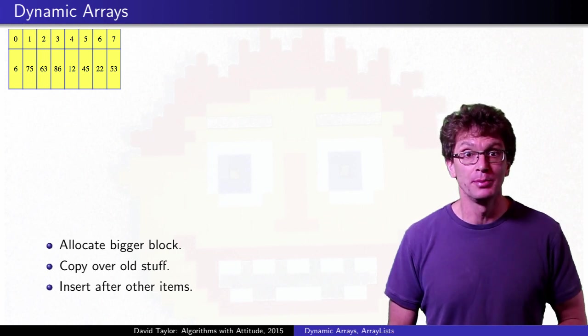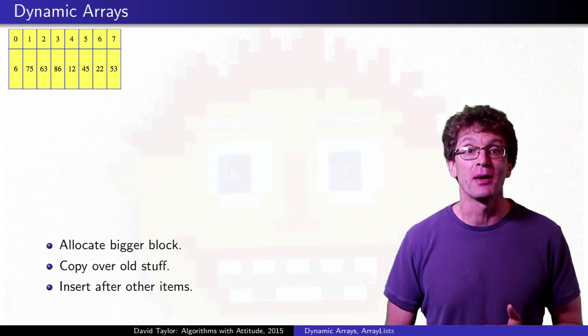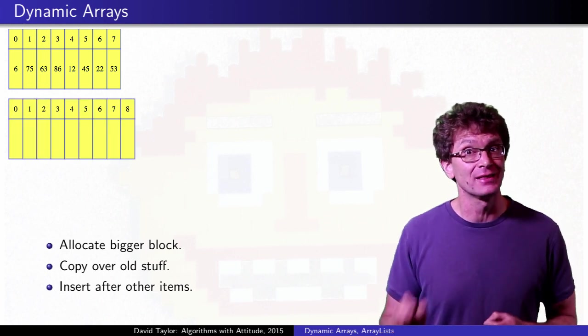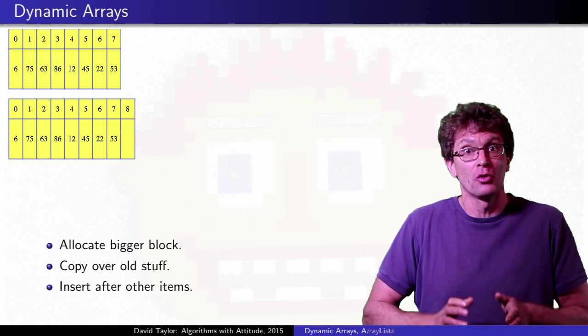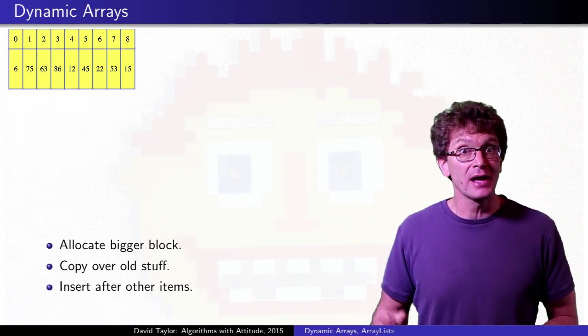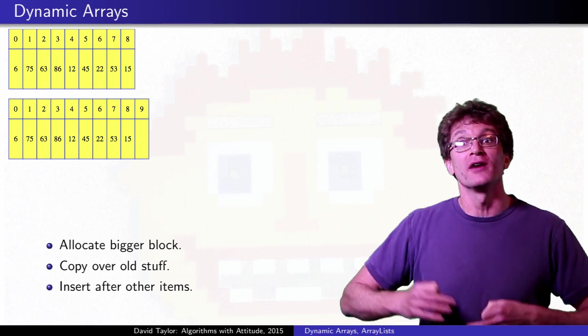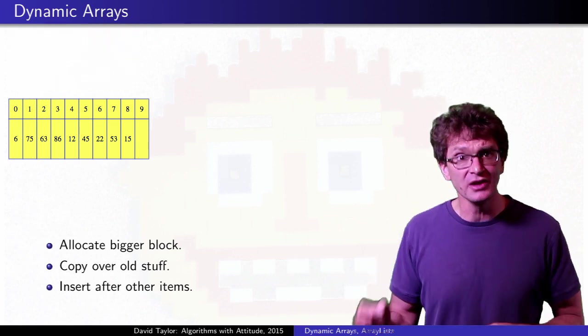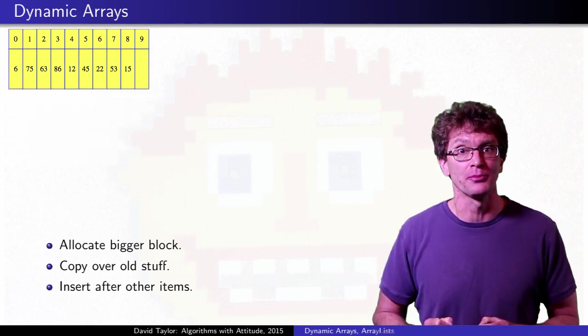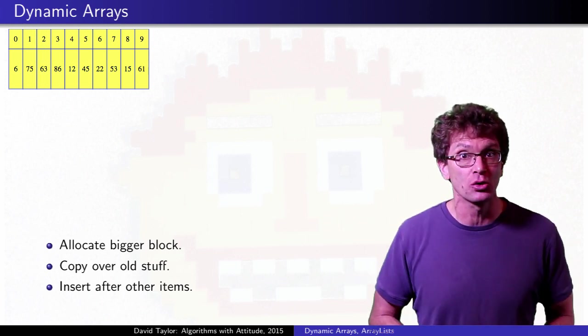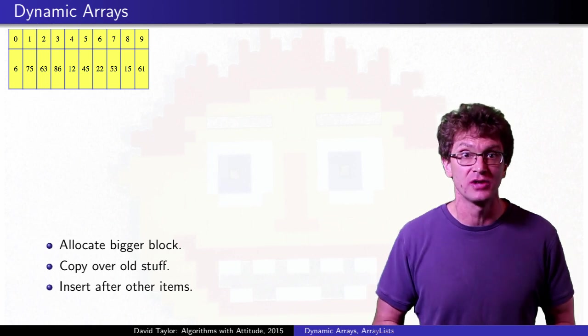A bad way to go would be to just allocate exactly the space you know you need right now. So for my example, if I need room for the 9th element, I could copy over everything into an array with 9 spaces, but later if I want to add a 10th item, I would then need to move to an array of size 10. With this approach, I can really hose myself. To add the ith item takes time proportional to i, so if I add n total items, it takes order n squared time.